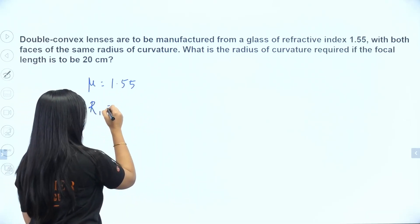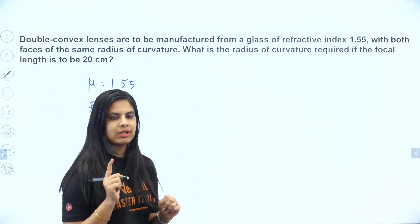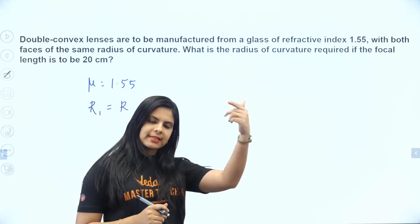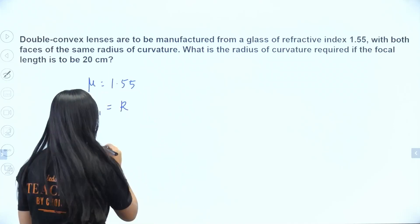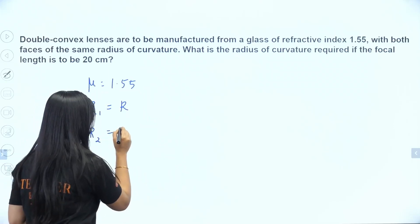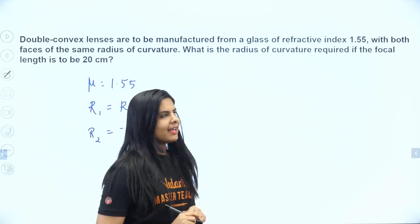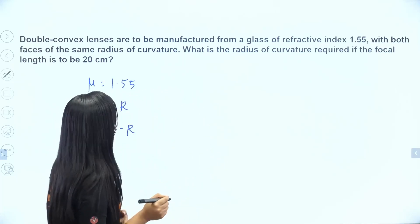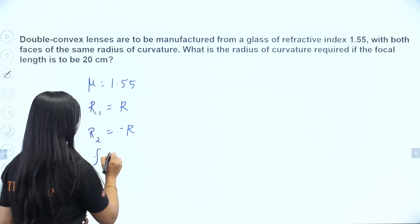R1 is the radius of curvature of the first face. R2, the radius of curvature of the second face, is equal to minus R. Then what is the radius of curvature required if the focal length is 20 cm?